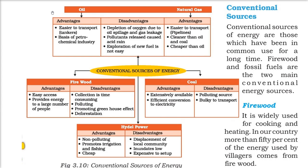Oil and natural gas — let us see their advantages first. Oil is easier to transport in tankers and is the basis of the petrochemical industry. Natural gas can be easily transported through pipelines and is cleaner than oil and coal, and also cheaper than oil. The disadvantage is the depletion of oxygen due to oil spillage and gas leakage.